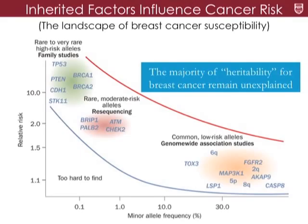Our genomes are largely similar, but we do have small differences between each other, and these differences can be important in terms of your risk for cancer. These risk factors vary in terms of the risk they convey. Some are called genetic variants that exist among us.